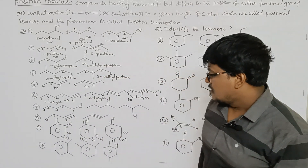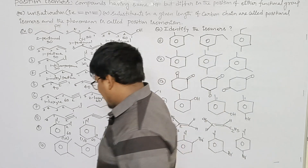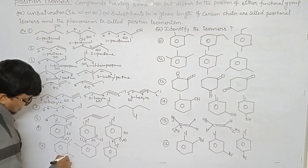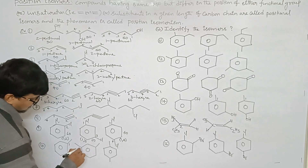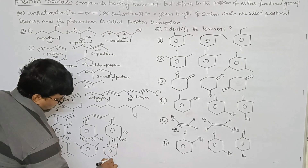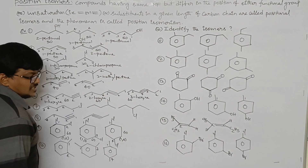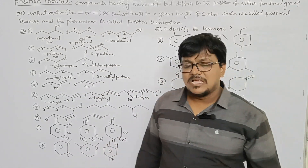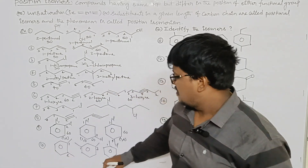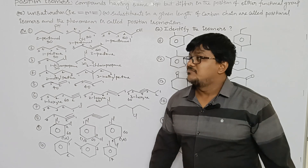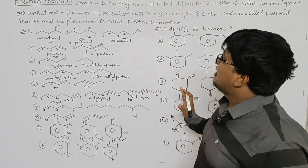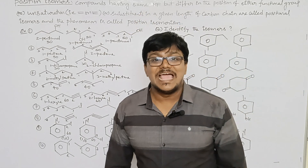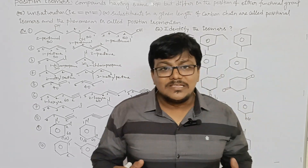The tenth example: dimethylbenzene. The three arrangements are 1,2-dimethylbenzene (ortho-dimethylbenzene), 1,3-dimethylbenzene (meta-dimethylbenzene), and 1,4-dimethylbenzene (para-dimethylbenzene). These three are positional isomers.